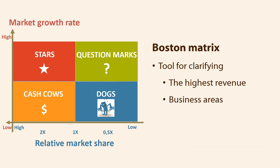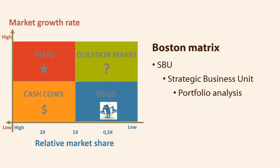A company must continuously look at how its business areas are doing. A business area is also called an SBU, which stands for Strategic Business Unit — an area of products that have independent management and marketing. The model is part of a portfolio analysis, which means analyzing the company's products. The Boston Matrix is well suited to looking at how these business areas are doing in the company's overall product offering, to see if some products need more marketing or whether there are product groups that should go out of the range.